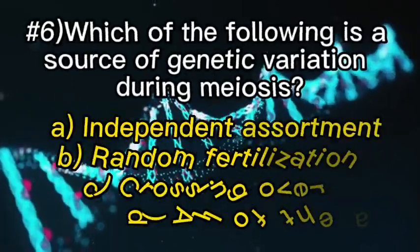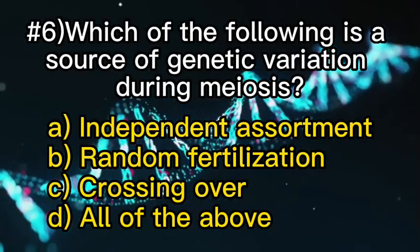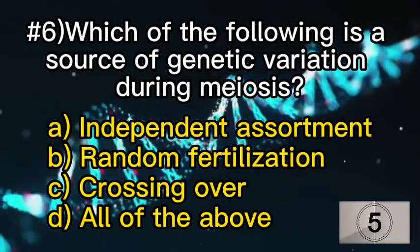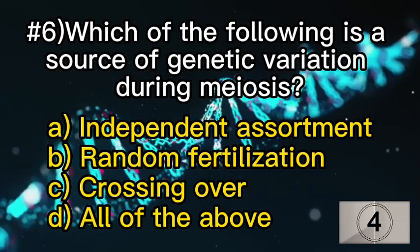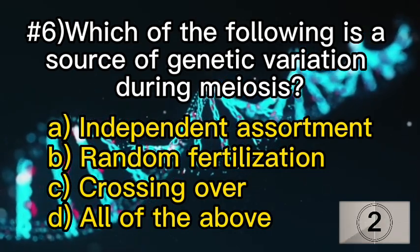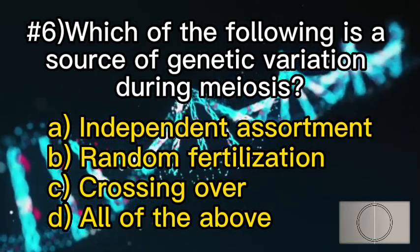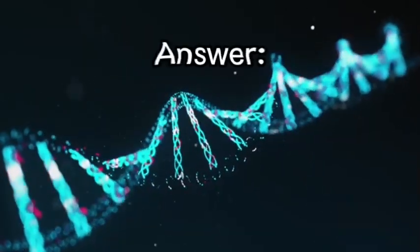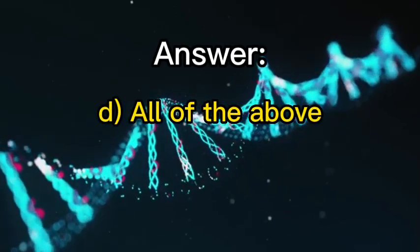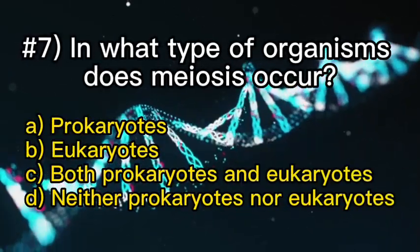Number six: which of the following is a source of genetic variation during meiosis? D — all of the above. Number seven: